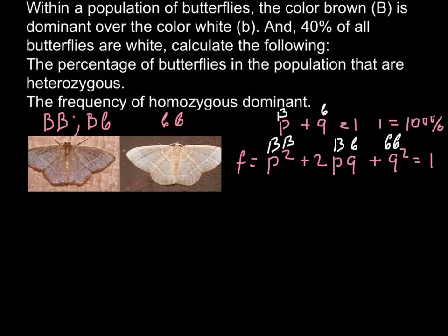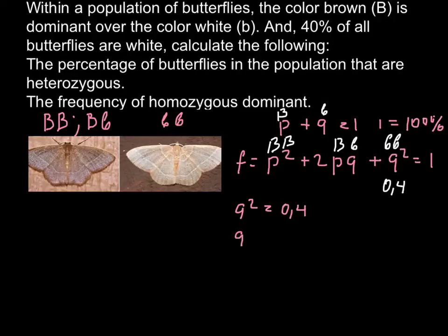We know from our problem that white butterflies represent 40%, and since 1 equals 100%, that means q squared equals 0.4. This is the frequency of the white butterflies or homozygous recessive. As long as we know q squared equals 0.4, we can find q — and q equals the square root of 0.4, which is 0.63.